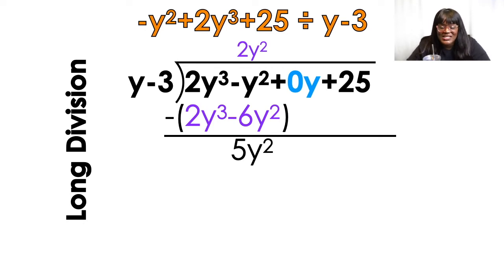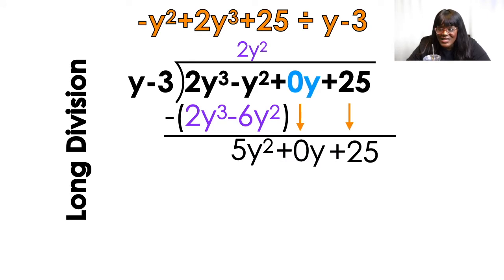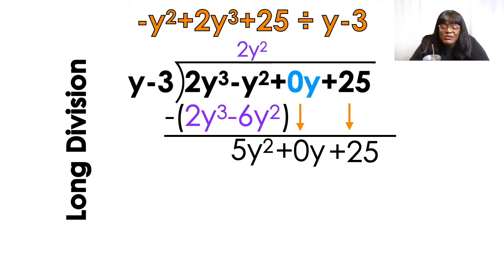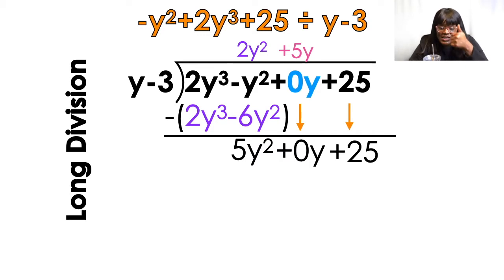We're going to start the process over again. I'm going to bring down the 0y and the 25, and I'm going to ask the same question, but now looking at the 5y squared. What times y equals 5y squared? 5y. 5y times y equals 5y squared. So I'm going to take that, multiply it — 5y times y equals 5y squared, and 5y times negative 3 equals negative 15y.